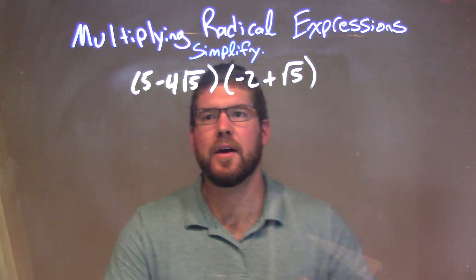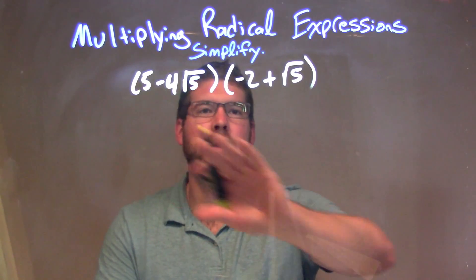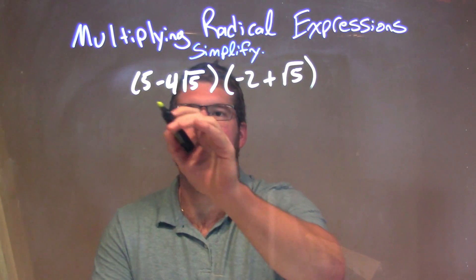What I want to do is take all parts of my first parenthesis and multiply by all parts of my second parenthesis.